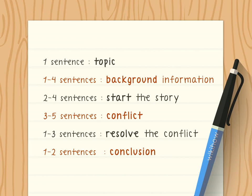Plan to write a narrative paragraph of at least nine sentences. Write one topic sentence, one to four sentences of background information, two to four sentences to start the story, three to five sentences to present the conflict, one to three sentences to resolve the conflict, and one to two sentences to provide a conclusion. While the length of your paragraph will vary based on the content, a standard five sentence paragraph likely will not provide enough detail to tell a complete narrative.